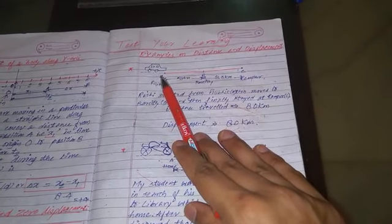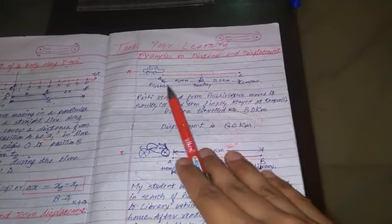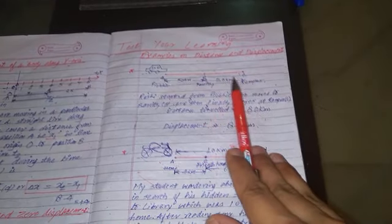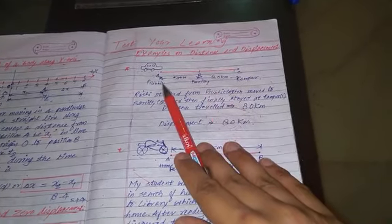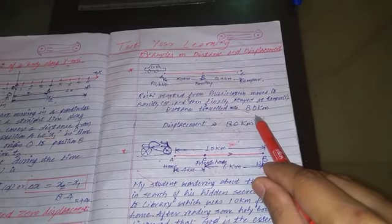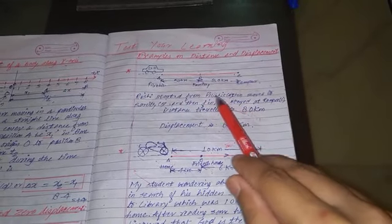See, you are traveling by car from Pilibit to Rampur via Bareilly. The distance between Pilibit and Bareilly is 50 km and from Bareilly to Rampur it is 30 km. So you travel a distance that is 50 plus 30, that is 80 km. So your actual length is 80 km.